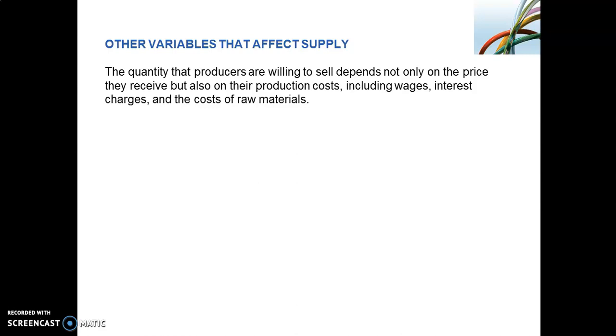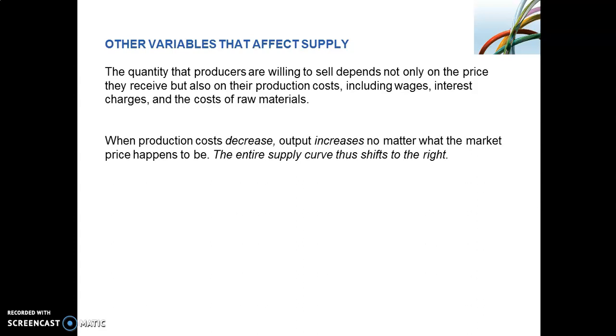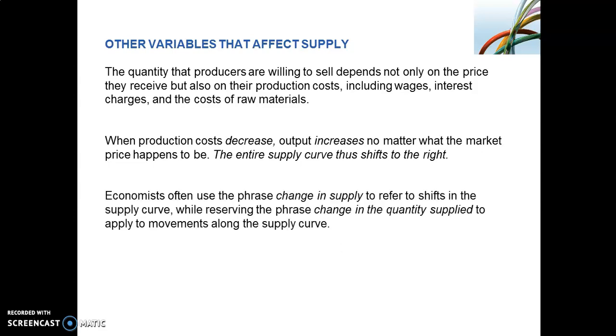We know that other variables affect supply, not just the price that producers receive, but also production costs, wages, interest charges, and the cost of materials. When production costs decrease, output increases no matter what the market price, and the entire supply curve shifts to the right. You should be able to do similar analysis for a scenario where production costs increase, and hence the supply curve would shift to the left. It is also important that you remember, as economists, we refer to a change in supply as referring to a shift in the entire supply curve, while we reserve the phrase a change in the quantity supplied to movements along the supply curve, which result from a change in price.